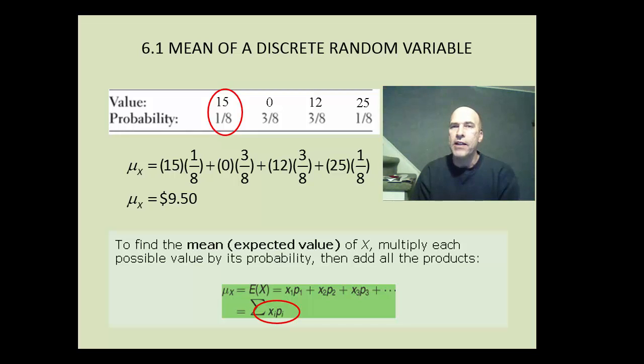Now, notice $9.50 is not any of the particular outcomes. What the mean of the random variable tells us is if we did this game over and over and over again, what would the average be in a long number of trials of this game? And that's an example of the law of large numbers that we saw in the previous chapter. So $9.50 doesn't tell us what's going to happen in the short term. It tells us in the long term that if we played this game repeatedly, we would average out to $9.50. So the mean is actually pretty easy to compute if you have a nice short list in your discrete random variable probability distribution.